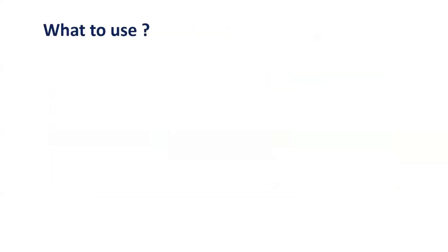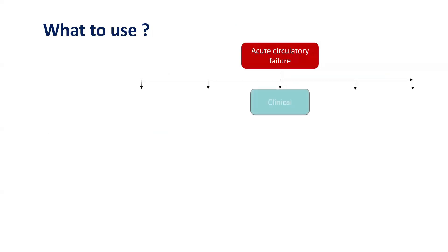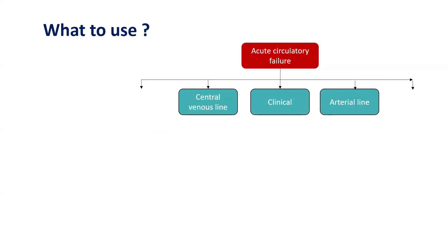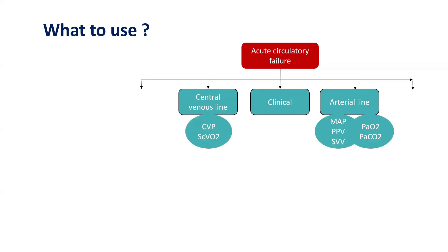So what to use and where? In any case of acute circulatory failure, we go by our clinical findings. If access and availability allow, it is always preferred to place a central venous line and an arterial line, which can provide central venous pressure and central venous oxygenation. The arterial line can give mean arterial pressure, pulse pressure variation, stroke volume variation, and can also help assess oxygenation and ventilation.